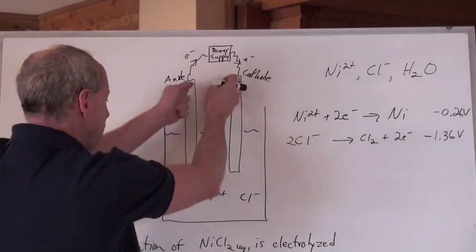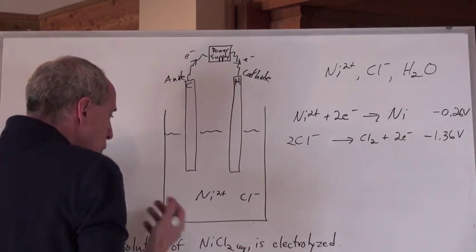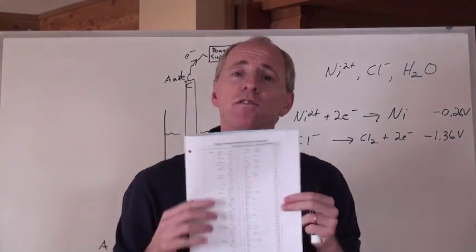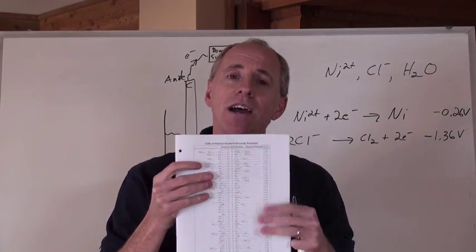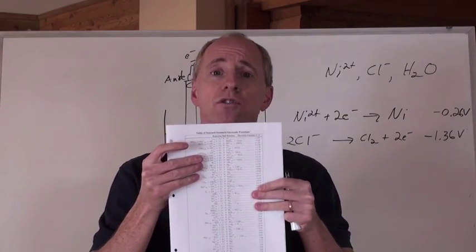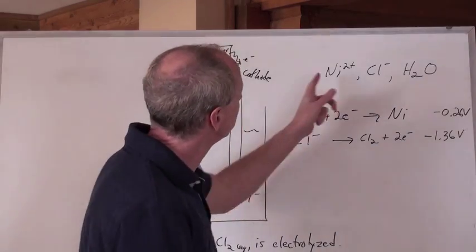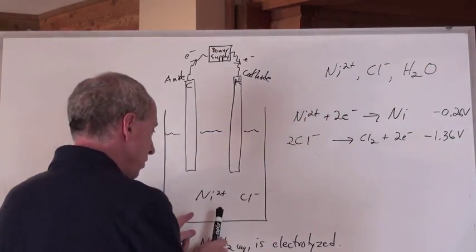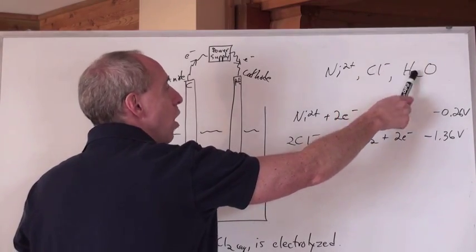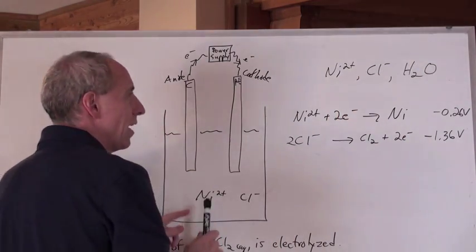So now, we're going to zap the solution of nickel chloride. What's going to happen? Well, you still need to use your chart to be able to find the highest chemical on the left and the lowest on the right, that's the strongest oxidizing agent reacting with the strongest reducing agent. And when you do that with this list of chemicals here, what we got is nickel 2+ ions, chloride ions, and water. That's what's in here getting zapped.